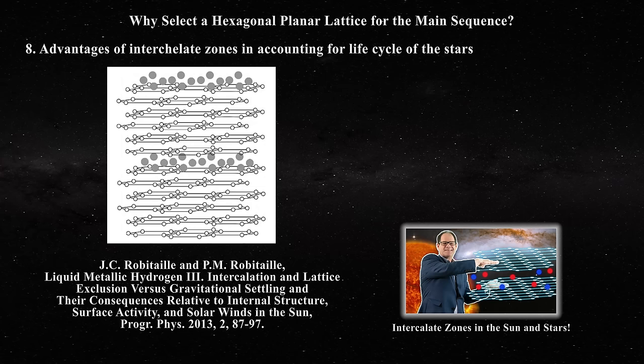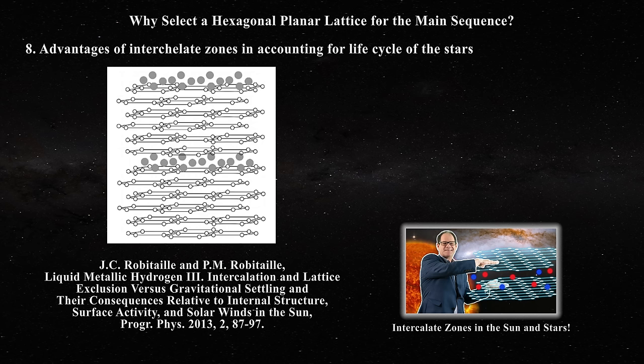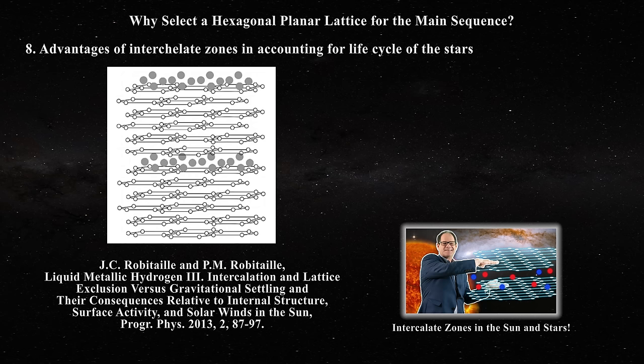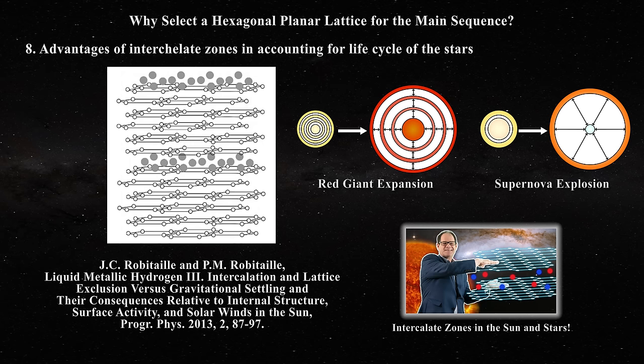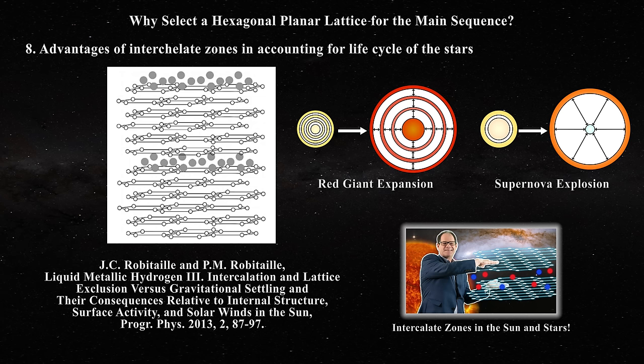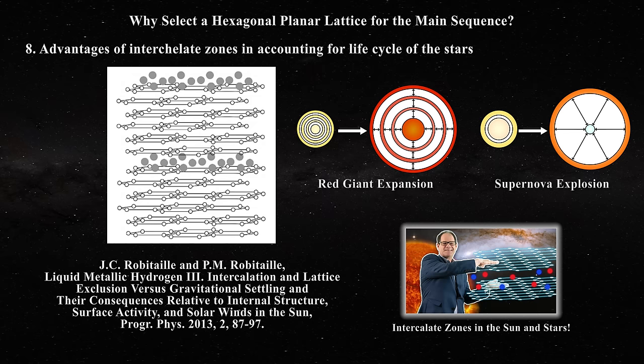An eighth reason stems from consideration of the life cycle of the stars. When intercalate regions are introduced, there are significant consequences. Much of the behavior of the stars can be easily explained based on what we observe on Earth in the laboratory. The idea that intercalate regions can rapidly expand may be applied and increase our understanding of objects such as red giants and supernovae. We will return to these star types in future videos. Compare the simplicity of these ideas to those of the standard model, where stellar behavior is either unaccounted for or requires a suspension of disbelief for acceptance. Lattice structure can be a key determinant of the behavior of an object on Earth, and this will also be true for the stars.